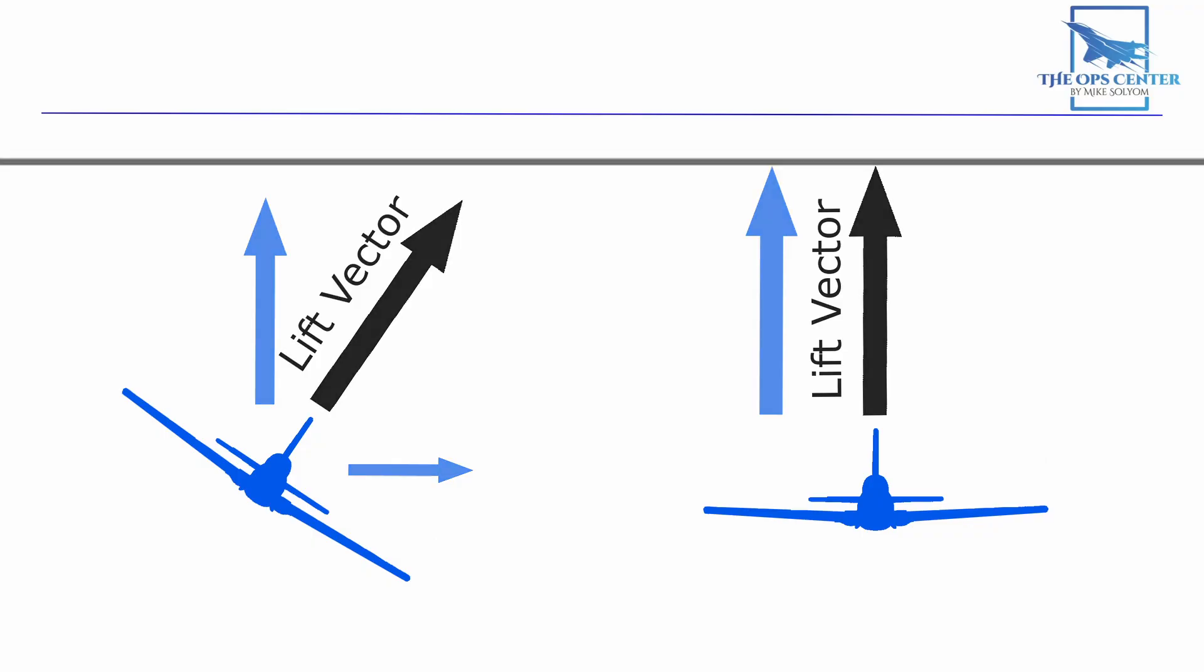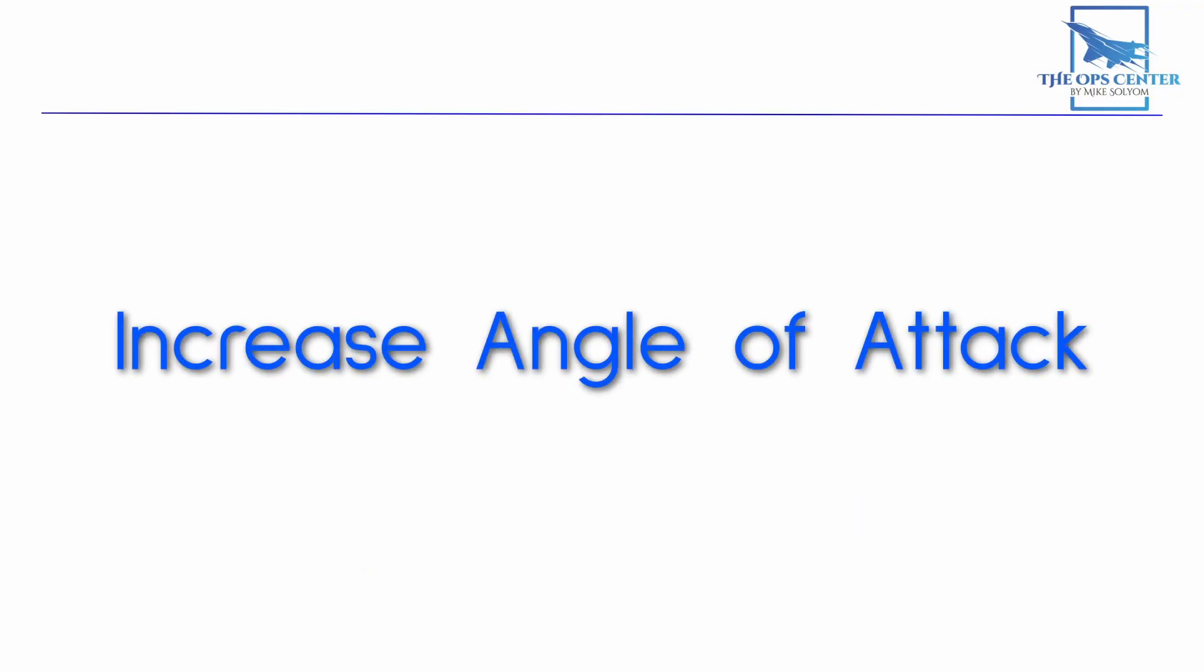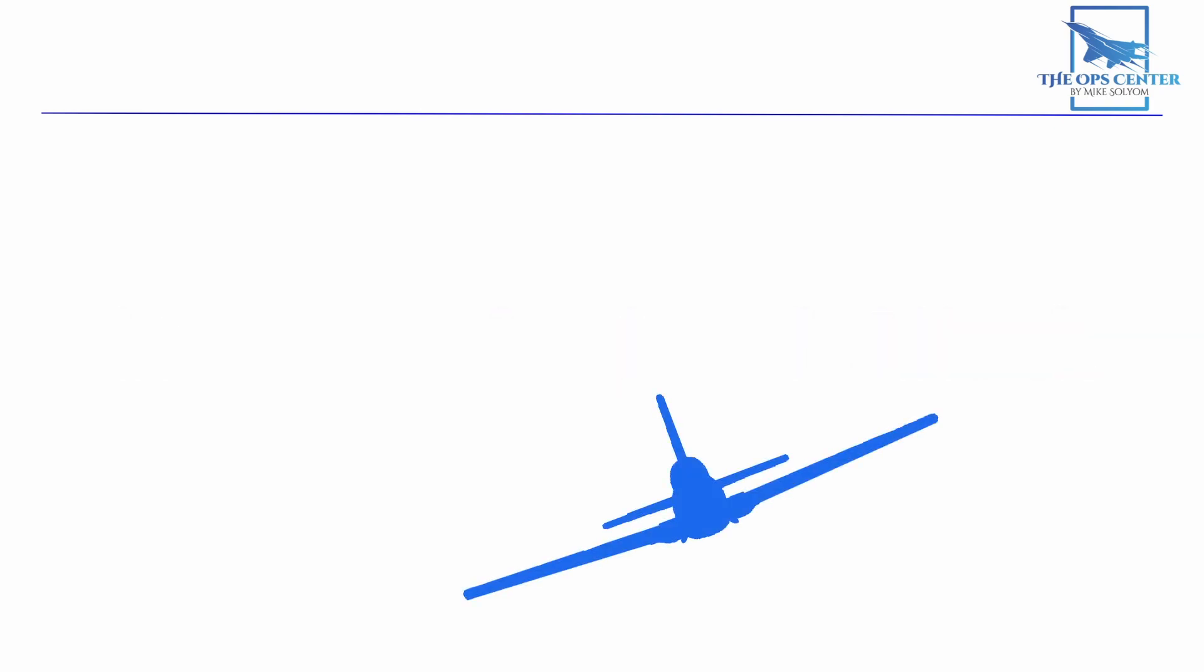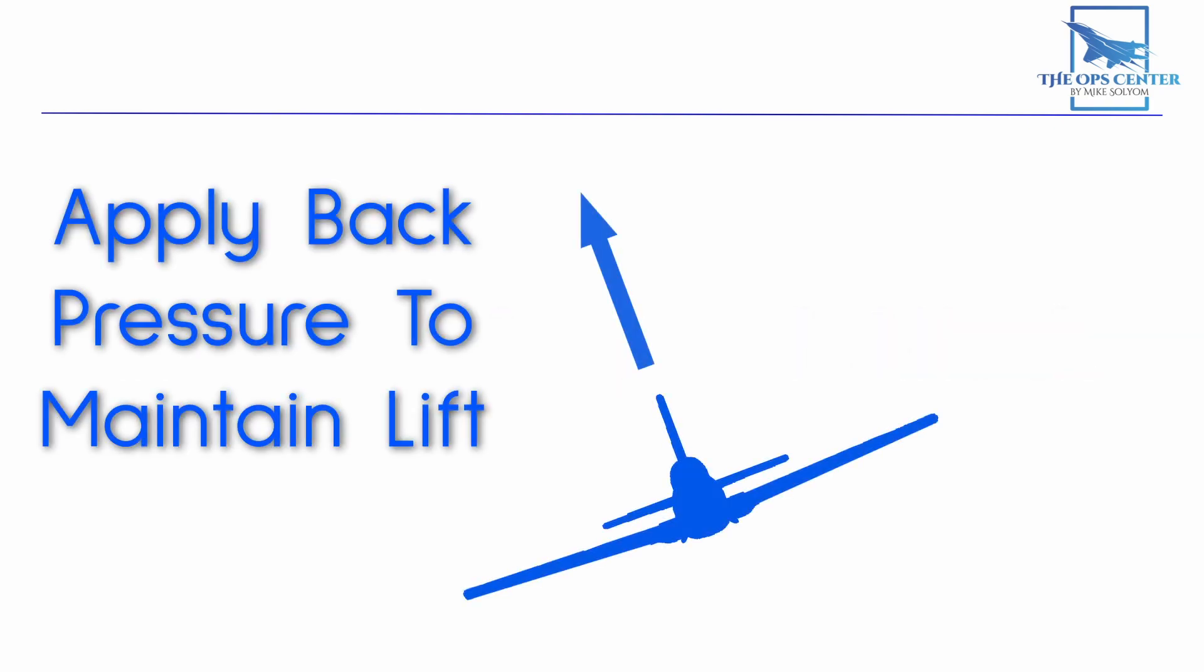So how do we increase lift? If you said by increasing angle of attack, then you would be correct. So in a turn, you'll have to pull back on the controls to increase angle of attack and lift to stay at your starting altitude. This is how you maintain altitude in a turn.